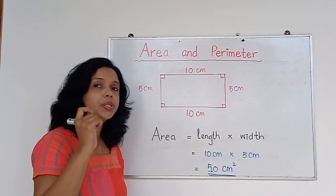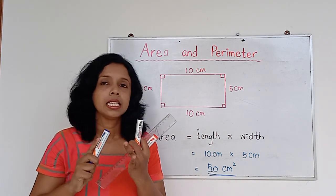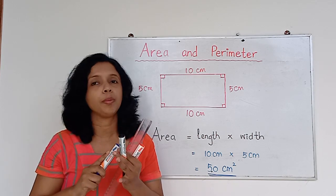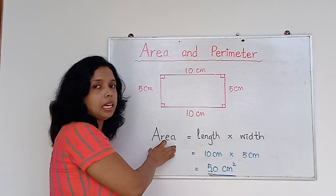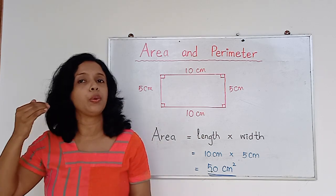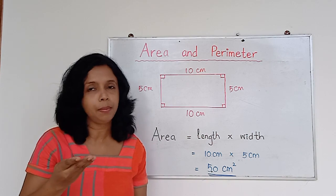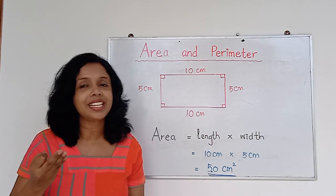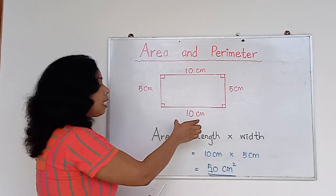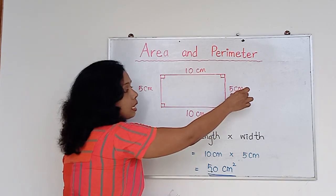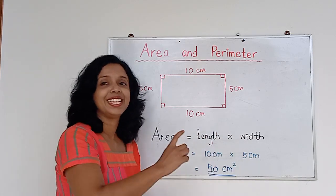When you are measuring a length, the units can be millimeters, centimeters, meters, or kilometers. Units of area are based on the units used for length and width — it can be square millimeters, square centimeters, square meters, or square kilometers. Here I have centimeters times centimeters, so the area is 50 square centimeters.